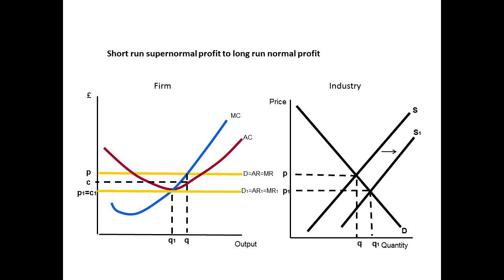The reason this specific point is the equilibrium is because anywhere up until this point, supernormal profit is being made, and so more and more firms are going to join the industry because they have an incentive to. However, once we reach this point where the demand curve goes through the bottom of AC and normal profit is being made,